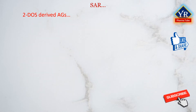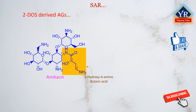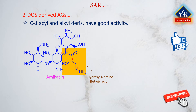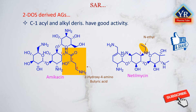An extremely useful modification of the aminocyclitol unit is acylation or alkylation of the C1 amine group, as exemplified by some semisynthetic aminoglycosides that have been marketed. Amikacin is the C1-N-hydroxybutyryl derivative of kanamycin A, and netilmycin is the N1-ethyl derivative of sisomycin. In general, the C1 position is tolerant of modification if the acyl or alkyl group is rather small in size. Typically, C1 substituents containing fewer than 5 carbon atoms offer good antibacterial activity.